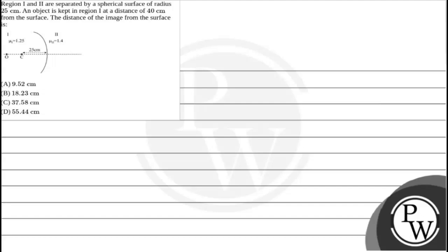Hello, let's read the question. The question says region 1 and 2 are separated by a spherical surface of radius 25 cm. An object is kept in region 1 at a distance of 40 cm from the surface. The distance of the image from the surface is?